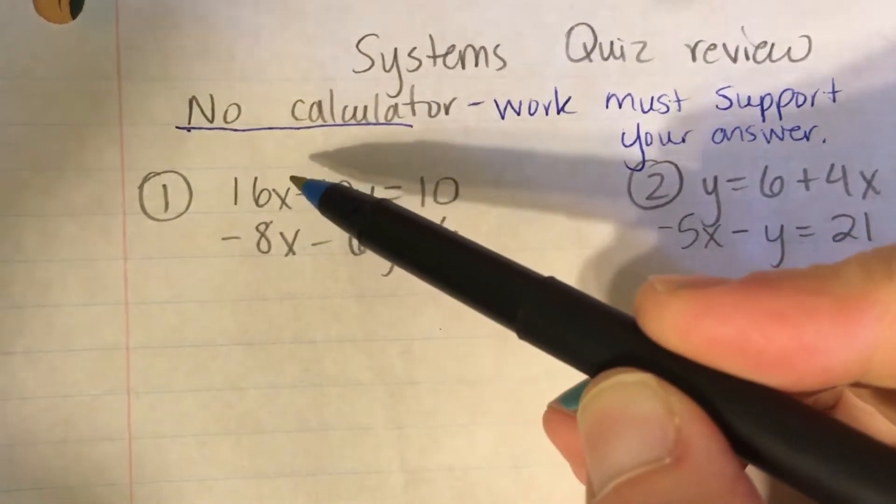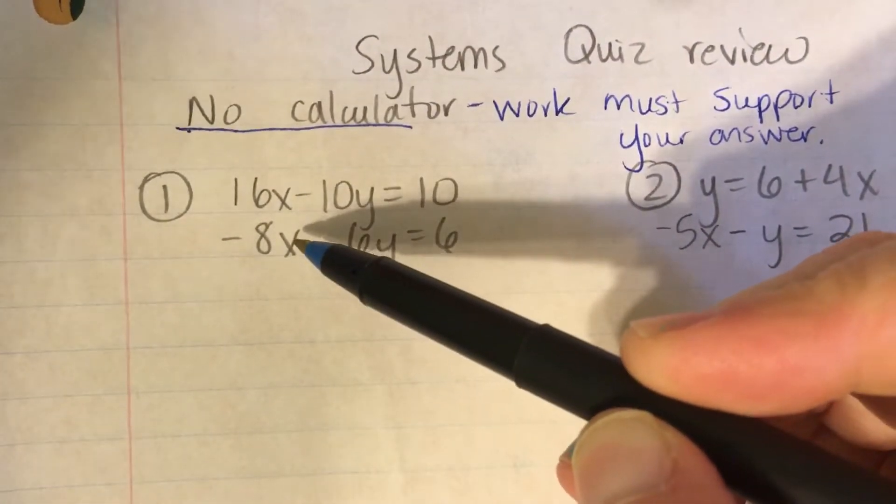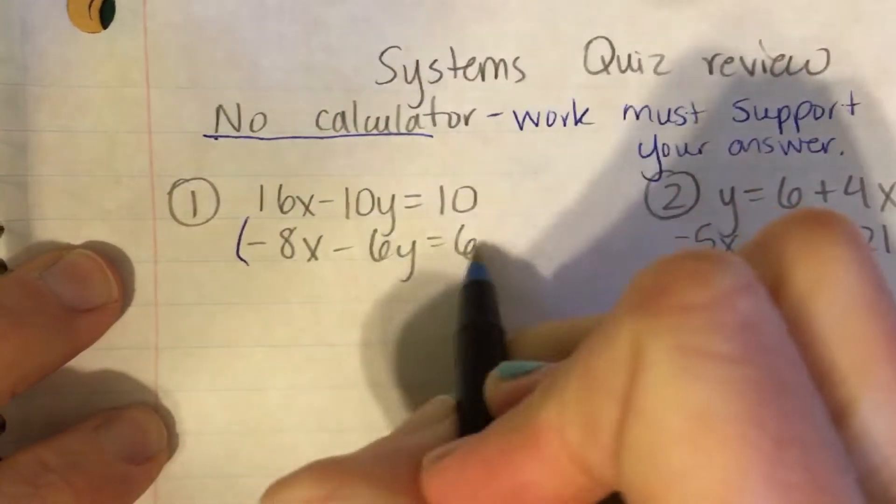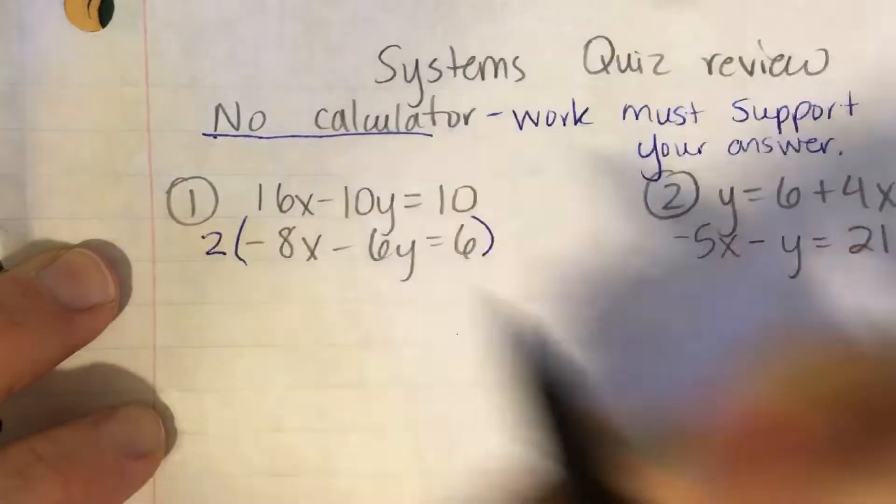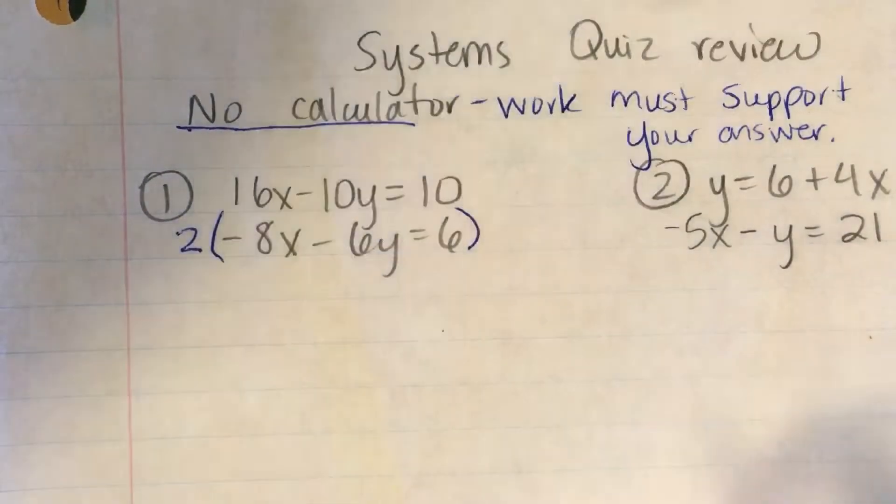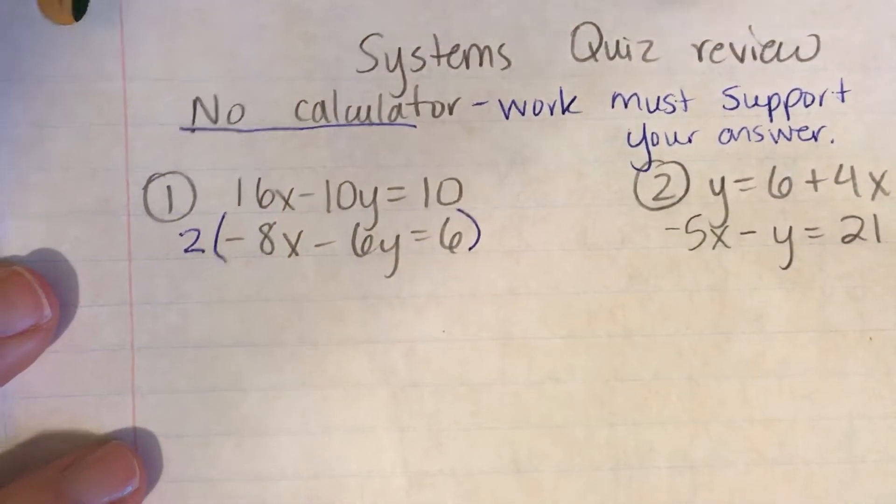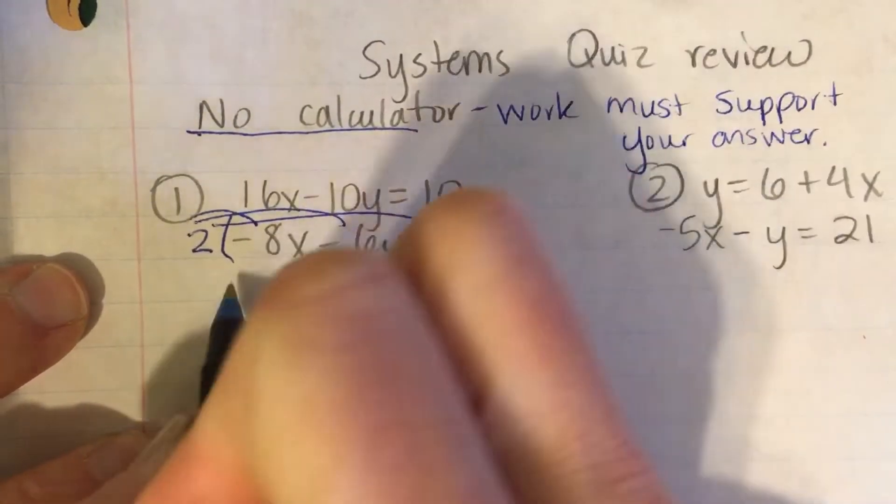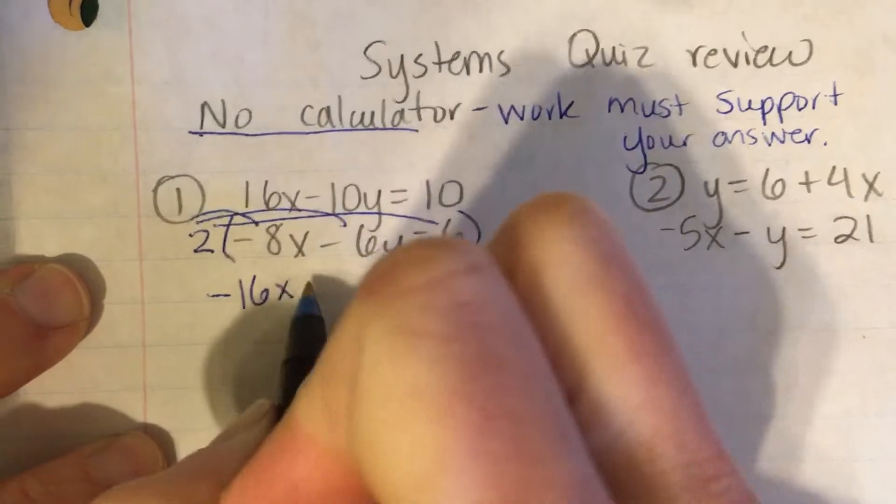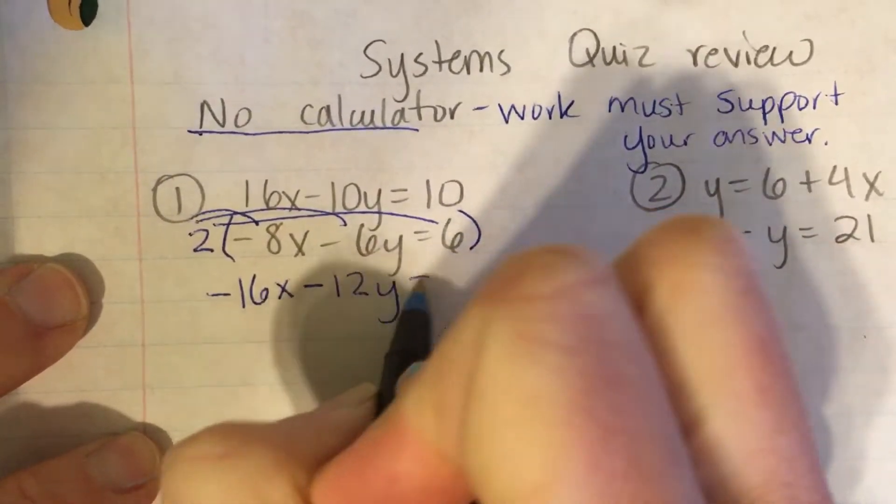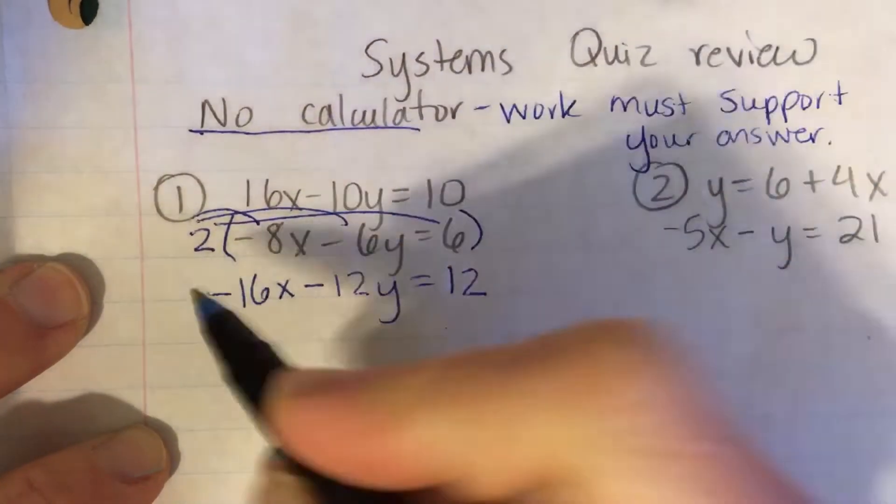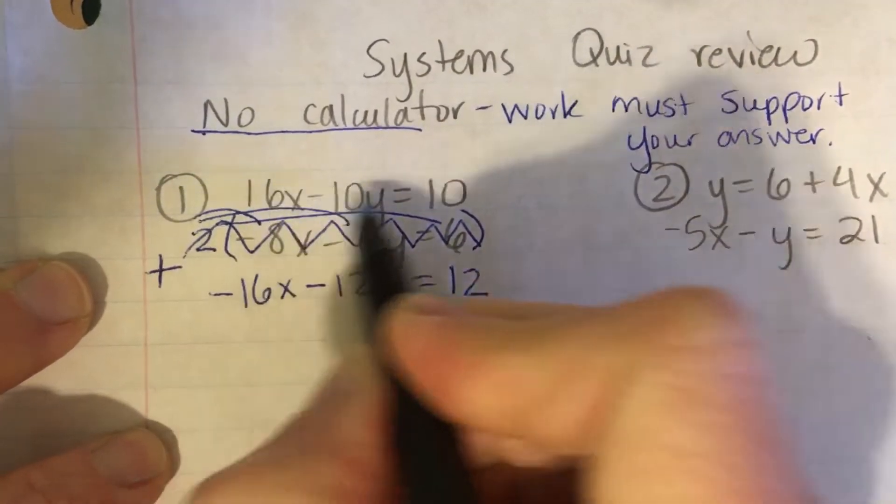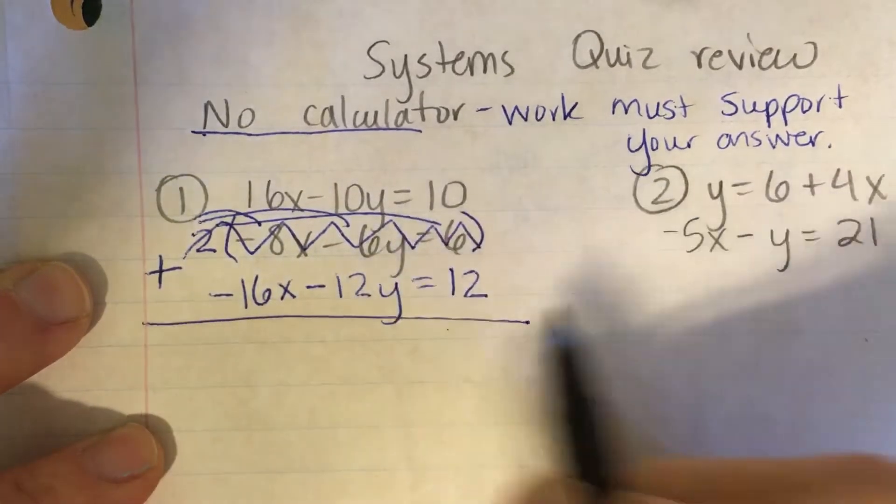Well, this is 16x. Can I multiply negative 8 by anything to cancel out with 16? You can. You can multiply it by 2. Remember, you can pause this video and write down the questions and do your work along with me. Alright, so I multiply everything by 2. That gives me negative 16x, negative 12y, and positive 12.